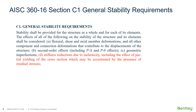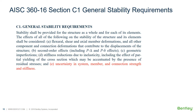Effect D: Stiffness reduction due to inelasticity, most notably that due to residual stresses. Residual stresses are a result of the manufacturing process for structural steel, resulting from the uneven cooling of the steel member. Effect E: Uncertainty in system, member, and connection strength and stiffness. These are assumed to be the effects covered by phi and omega, the resistance factors and safety factors.